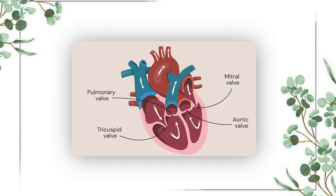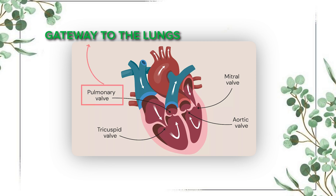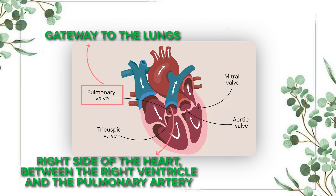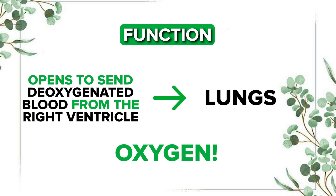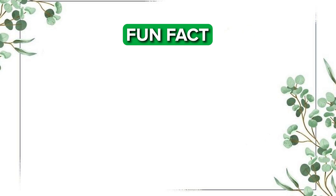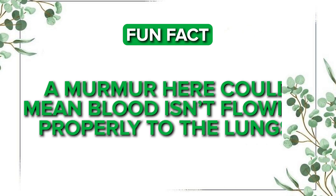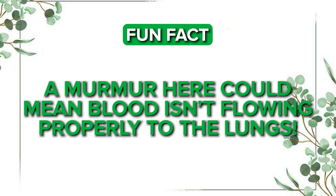What is the pulmonic valve? The pulmonic valve acts like a gateway to the lungs. Its location is on the right side of the heart, between the right ventricle and the pulmonary artery. Its function is to open and send deoxygenated blood from the right ventricle to the lungs to pick up oxygen. Fun fact: a murmur here could mean blood isn't flowing properly to the lungs.